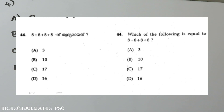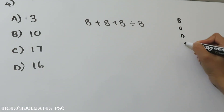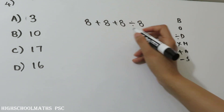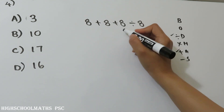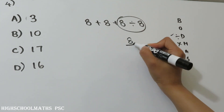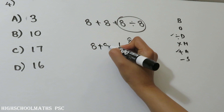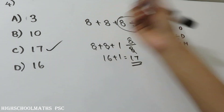4th question: 8 plus 8 plus 8 divided by 8. What is the answer? The options are 3, 10, 17, or 16. Now we have to apply the BODMAS rule. What is the operation? First division, then multiplication, then addition, then subtraction. So 8 divided by 8 equals 1. Then 8 plus 8 plus 1 equals 17. Option C is the answer.